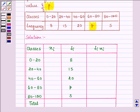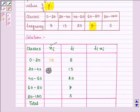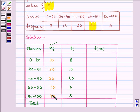Now here, let us first find out Xi, that is the class mark of these classes. That is 10, 30, 50, 70 and 90.